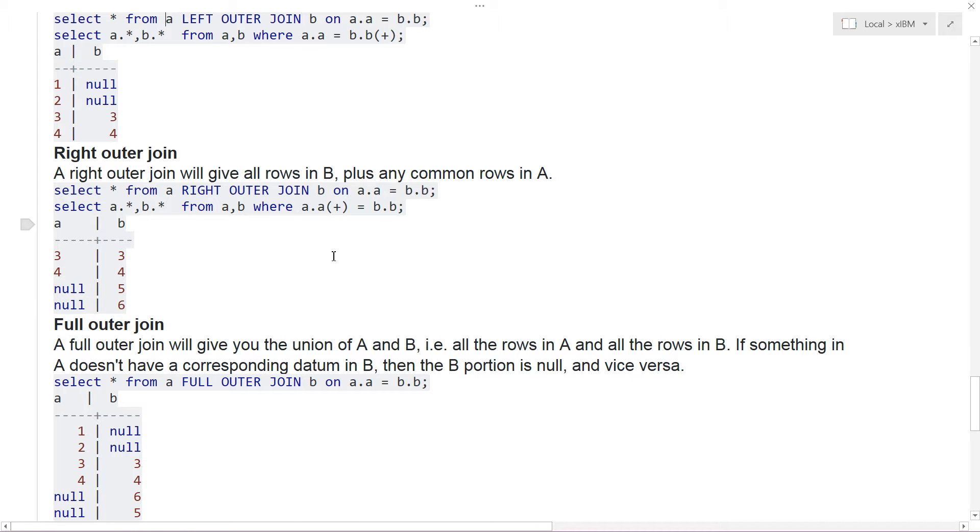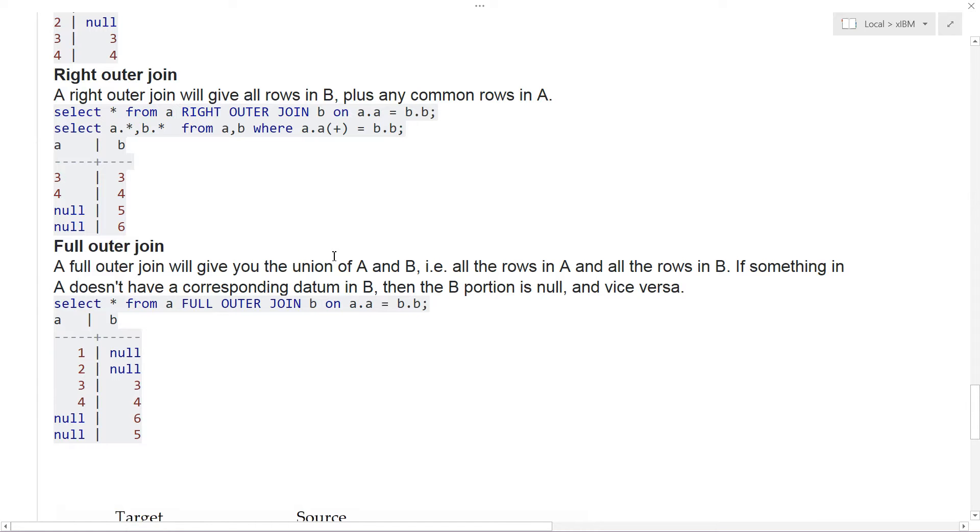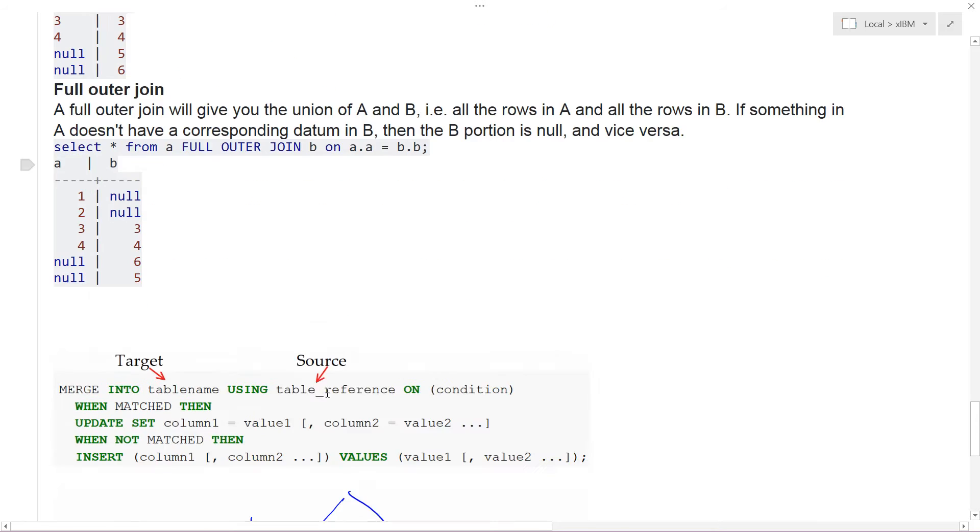So that is the right outer join. And then you have a full outer join, which, as it says, a full outer join will give you the union of A and B. That is all the rows in A and all the rows in B. If something in A doesn't have a corresponding datum in B, then the B portion is null, and vice versa. So SELECT star from A, full outer join B, on A.A equals B.B. And then there you go: one, two, three, four, and null, null, null, null, three, four. Again, the threes and the fours were shared, so you see both. And one and two were only in A, and five and six were only in B. And that is a full outer join.